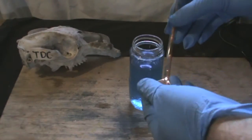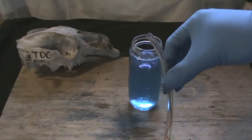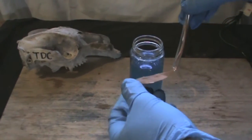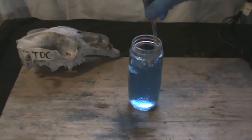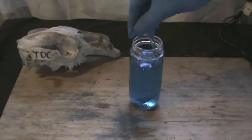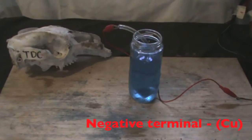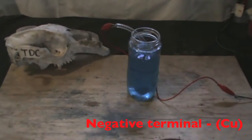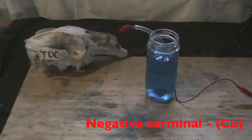After the addition of the copper sulfate, attach the copper electrode with the plastic piping around it into the cell. Attach the clip to the negative terminal of the power supply. This is your cathode.